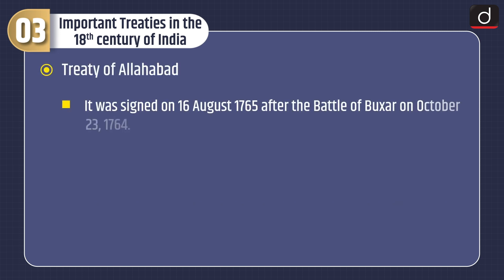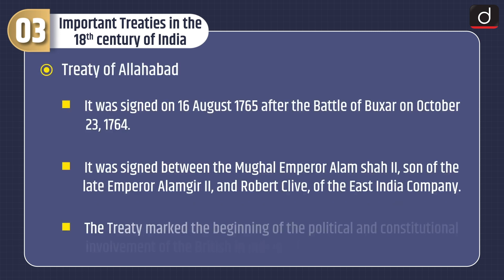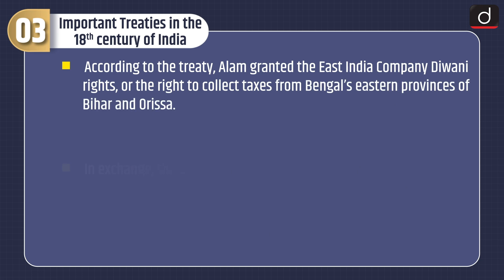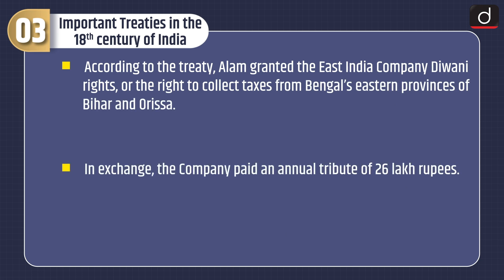Treaty of Allahabad. It was signed on 16 August 1765 after the Battle of Buxar on October 23, 1764. It was signed between the Mughal Emperor Shah Alam II, son of the late Emperor Alamgir II, and Robert Clive of the East India Company. The treaty marked the beginning of the political and constitutional involvement of the British in Indian affairs. According to the treaty, Shah Alam granted the East India Company Diwani rights — the right to collect taxes from Bengal's eastern provinces of Bihar and Odisha. In exchange, the company paid an annual tribute of 26 lakh rupees.